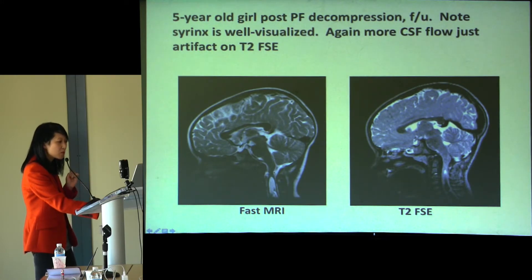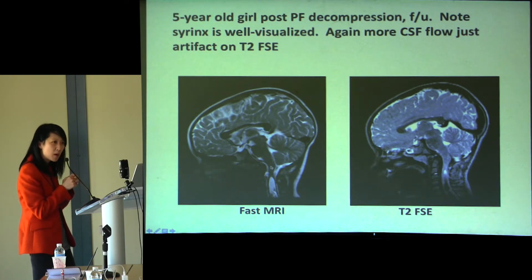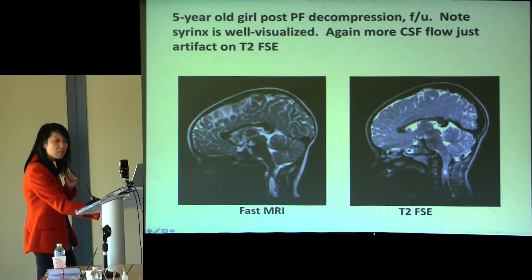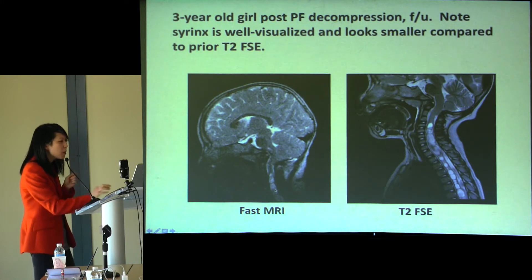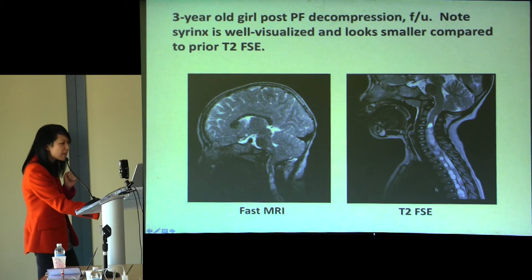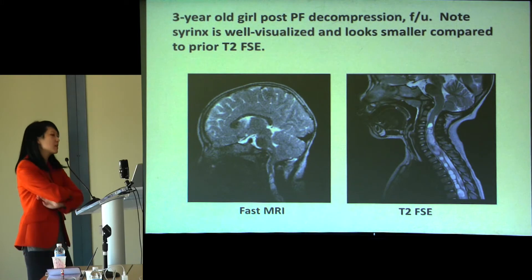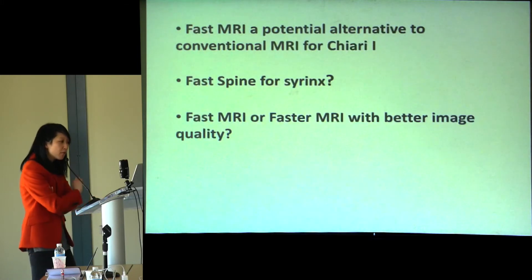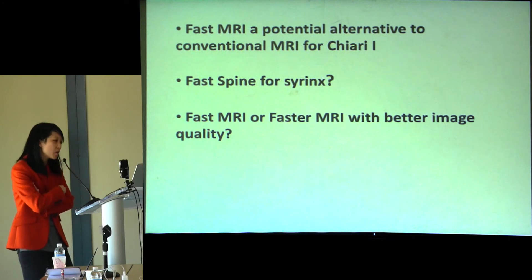Here's another kid post-decompression — the cisterna is pretty well visualized, which we thought was nice. We haven't done fast scan for spine yet, but we want to do that next. You can also see there's some CSF pulsation artifacts — that black stuff — which is less dominant on the fast scan. Here's another kid post-decompression: the syrinx is visible and possibly a little smaller. We want to bring fast spine into the protocol for these kids, especially to monitor changes in syrinx size.